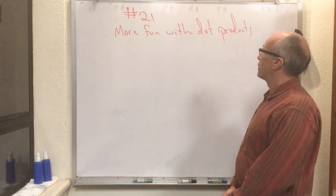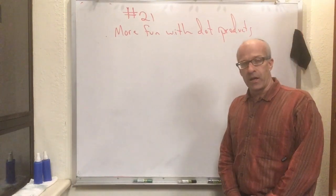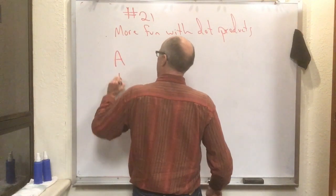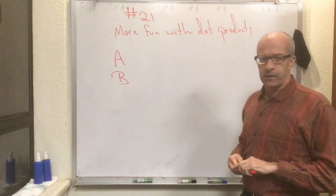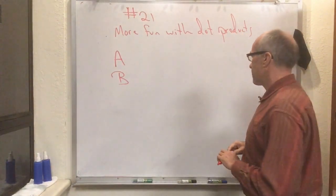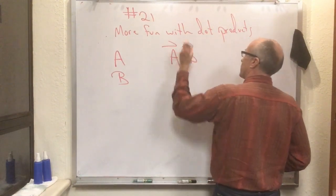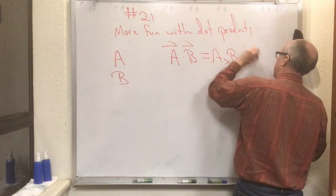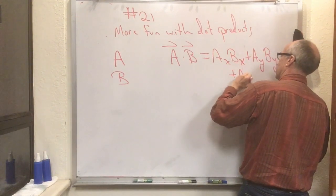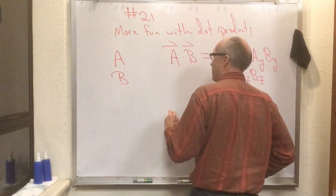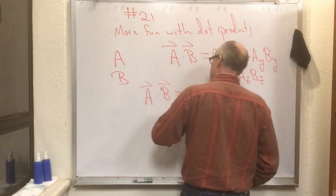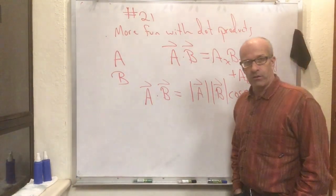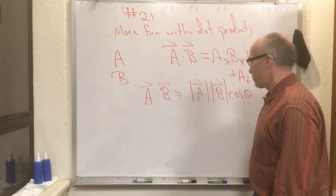This is flipped mini lecture number 21: more fun with dot products. If a and b are two vectors with components ax, bx, ay, by, az, and bz, then a dot b is ax·bx plus ay·by plus az·bz. But I also said that a dot b equals the length of a times the length of b times the cosine of the angle between the two vectors, and I said I'd prove that. Here's a proof I'm not entirely satisfied with, but it's decent.